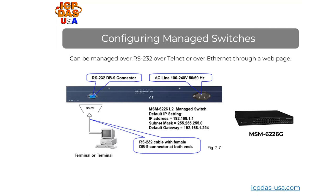The MSM6226G allows for one administrator to log in at a time. So if one person is logged in, another cannot simultaneously log in as administrator to make changes. You can have up to three users logged in at a time just for monitoring the system. The MSM6226G supports both IP version 4 and IP version 6, and you can change the IP settings, the system name, and the physical location description.